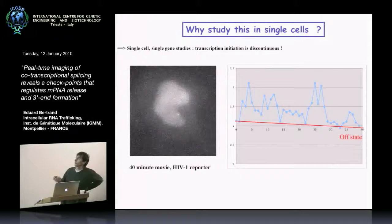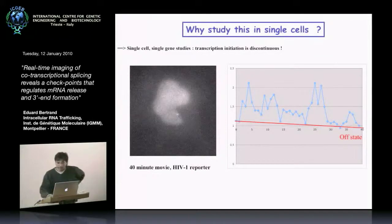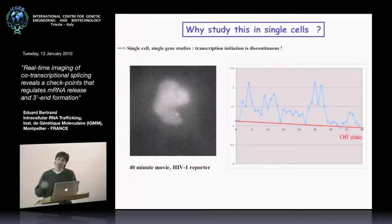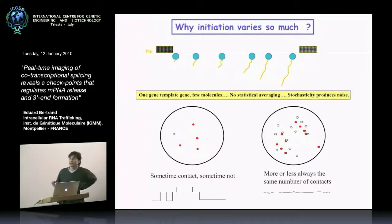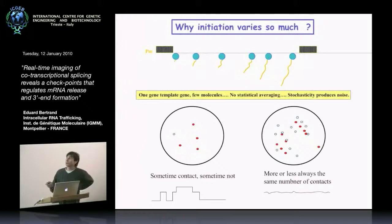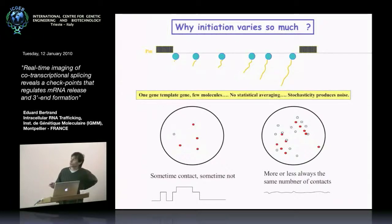This is the quantification of the data. This was surprising, because most people imagined that you just have polymerases coming on and transcribing the gene continuously. So why do you have such variation in the initiation rate over time? The problem is that all gene expression processes have to deal with very small numbers of molecules — you have one gene template, a few polymerases that are going to transcribe.